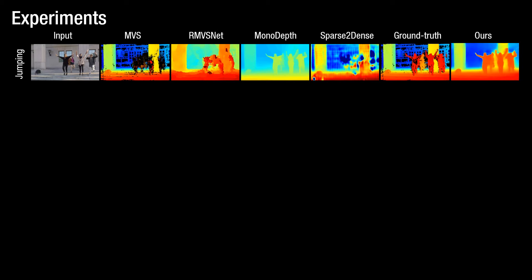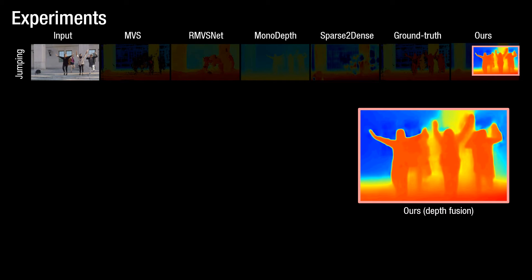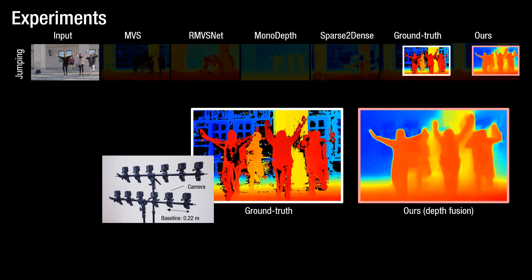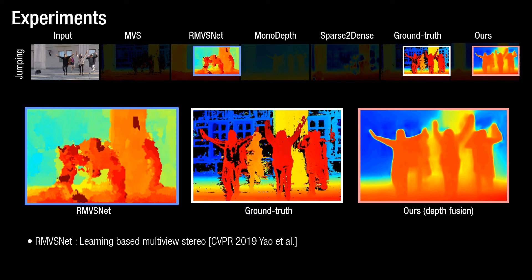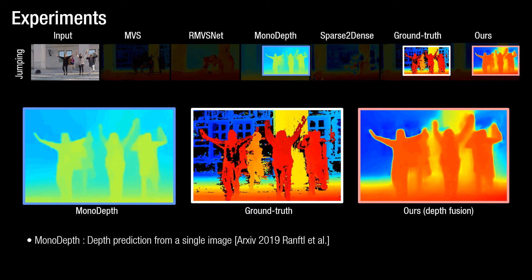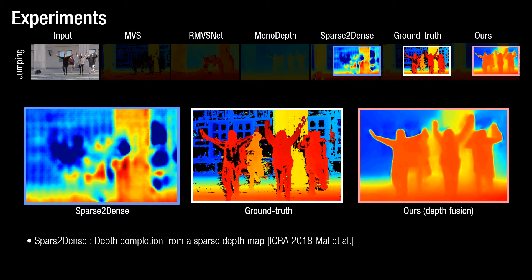This slide shows a comparison of depth estimation with other baseline methods. Here, 'ours' represents our depth fusion method. The ground truth is captured from a multi-view system where views are manually synchronized. The optimization-based multi-view stereo obviously fails to estimate depth on dynamic content as epipolar geometry does not apply. Even learning-based multi-view stereo fails on dynamic scenes. Mono-depth predicts depth from a single view, but its depth scale is highly inconsistent with the ground-truth depth. Sparse-to-dense, a recent depth completion method, completely fails without explicit guidance of visual and motion cues.